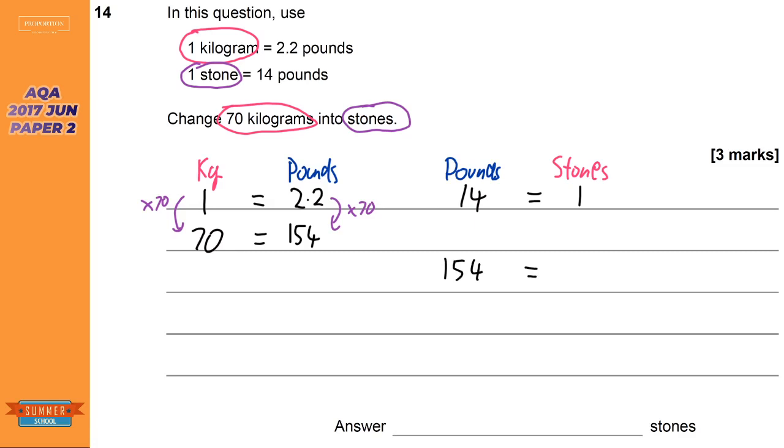We can't do it, well, we can, but it's easier not to do it in one step. It's easier to find out what one pound is first, and so we need to divide this side by 14, and divide this side by 14, and so we just get like 1 over 14.